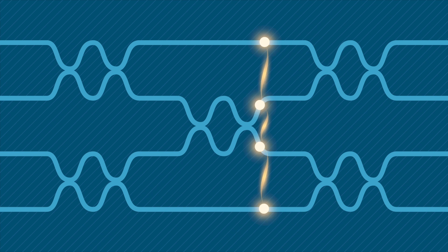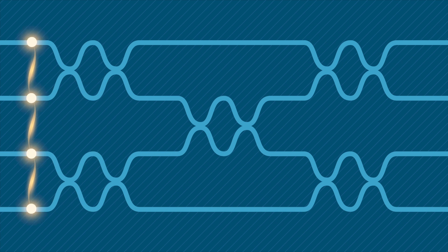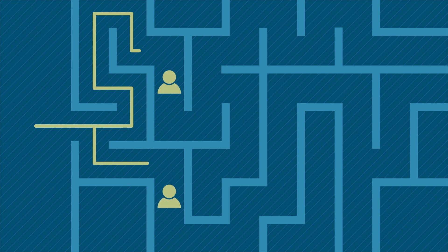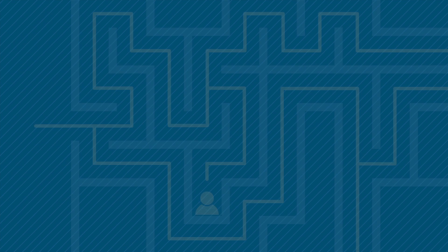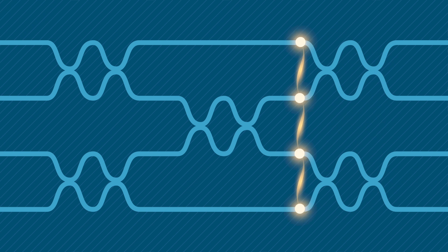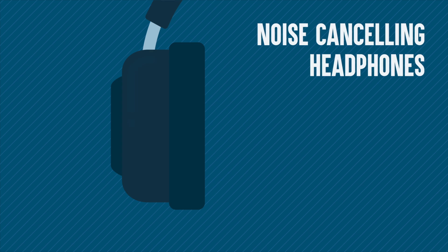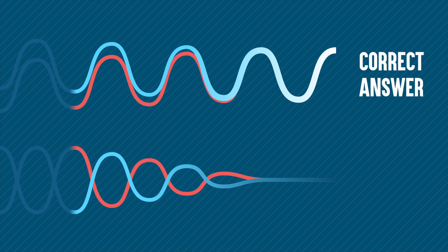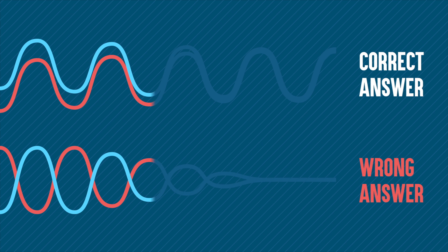In quantum computers, each photon takes many superpositions, following different paths through a network, like a person walking every route of a maze at the same time. The maze represents a calculation, with each route leading to a potential answer. Canceling out the wrong answers involves a trick used by noise-canceling headphones. Each path has different phases. Where they match, they reinforce each other, and where they don't, they cancel out, leaving only the correct answer.